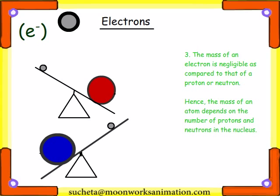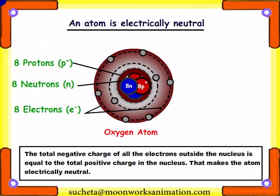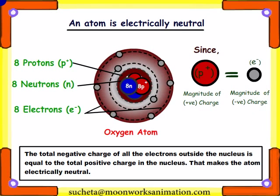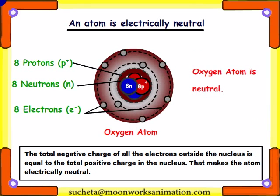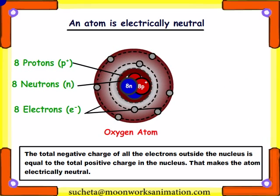Hence, the mass of an atom depends on the number of protons and neutrons in the nucleus. The total negative charge of all the electrons outside the nucleus is equal to the total positive charge in the nucleus, which makes an atom electrically neutral.